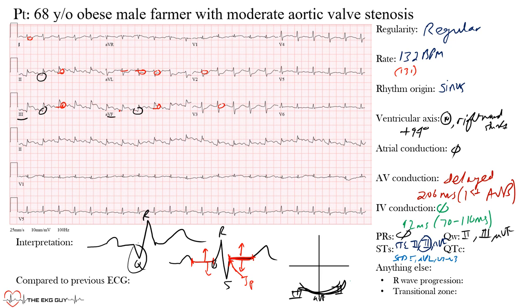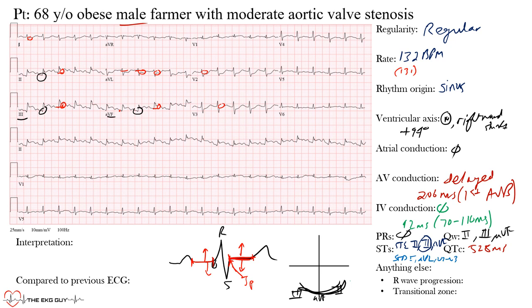The QTc — the heart rate-corrected QT interval, measured from the start of the QRS to the end of the T wave — was 528 milliseconds. In males the normal upper limit is 440 milliseconds and in females 460 milliseconds; we become alarmed around 500 milliseconds, so 528 is certainly prolonged.